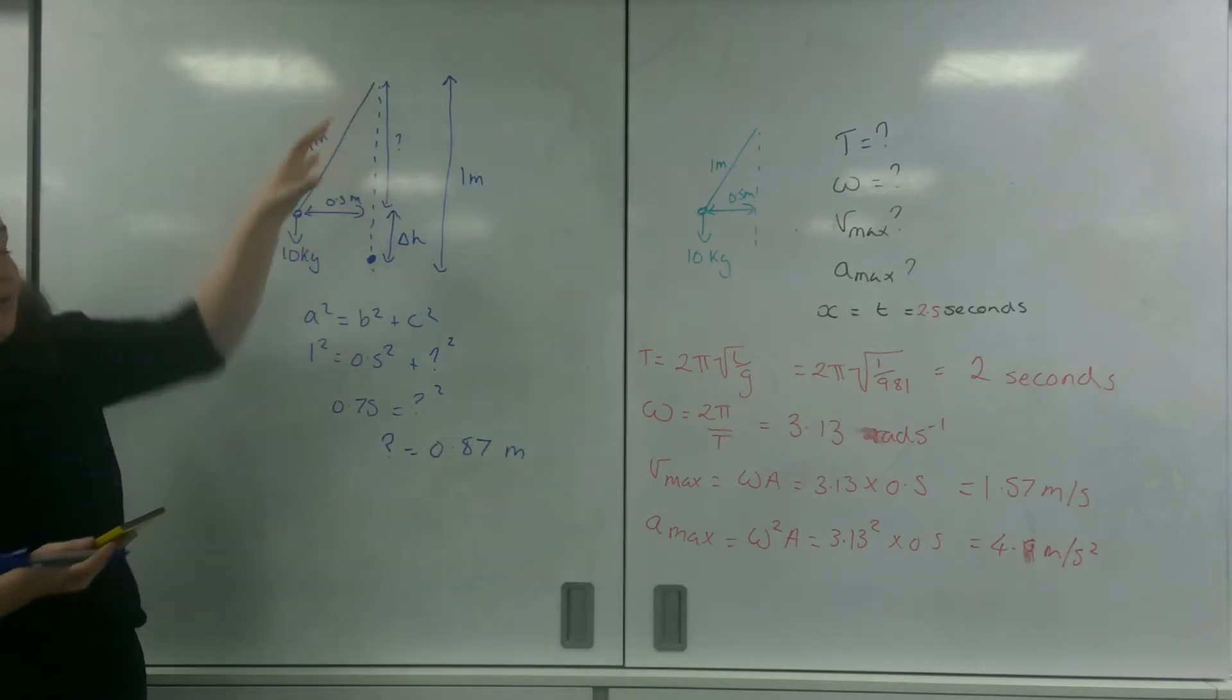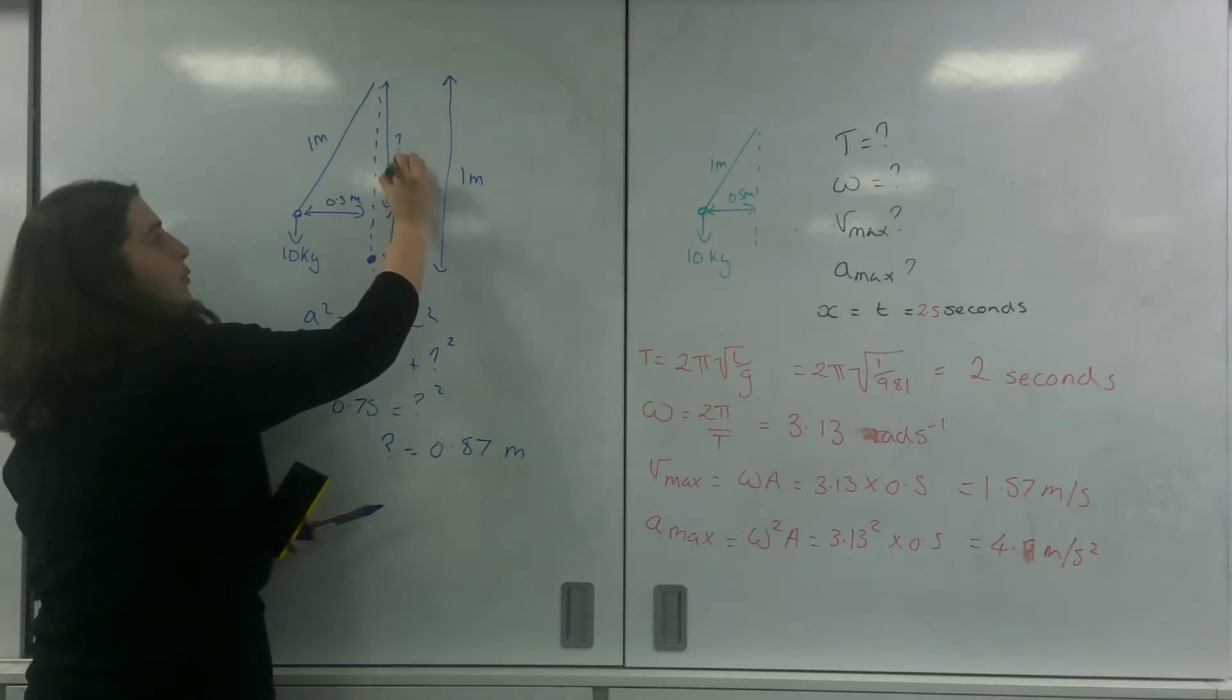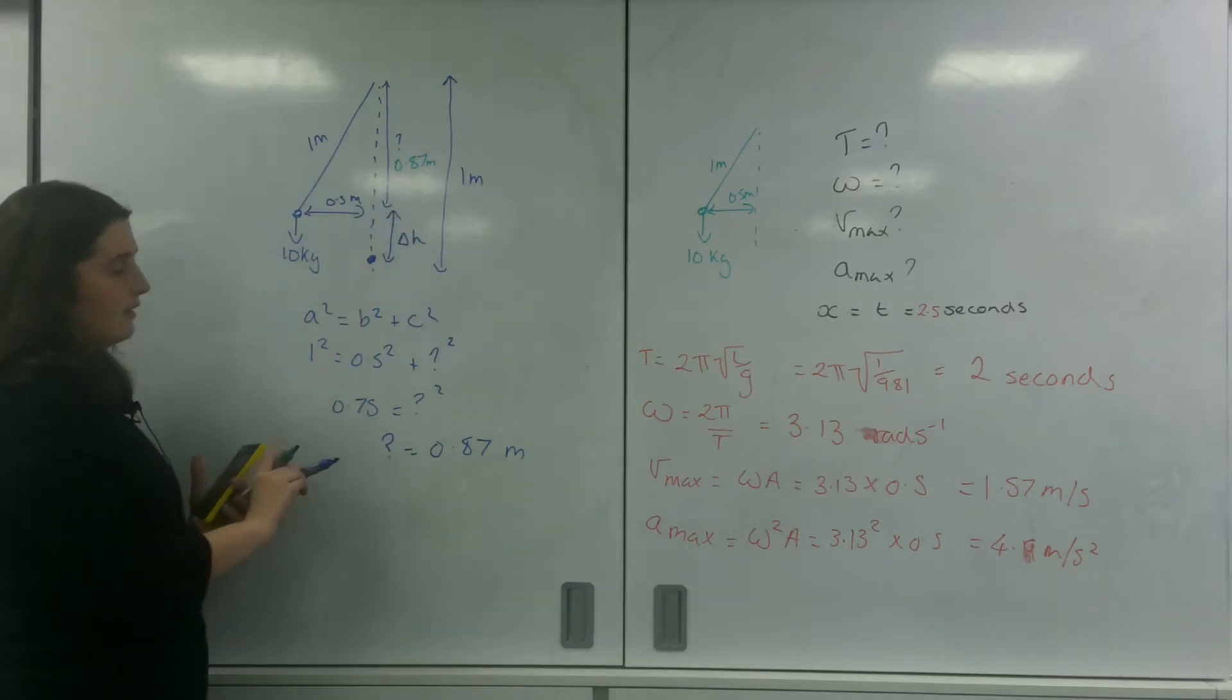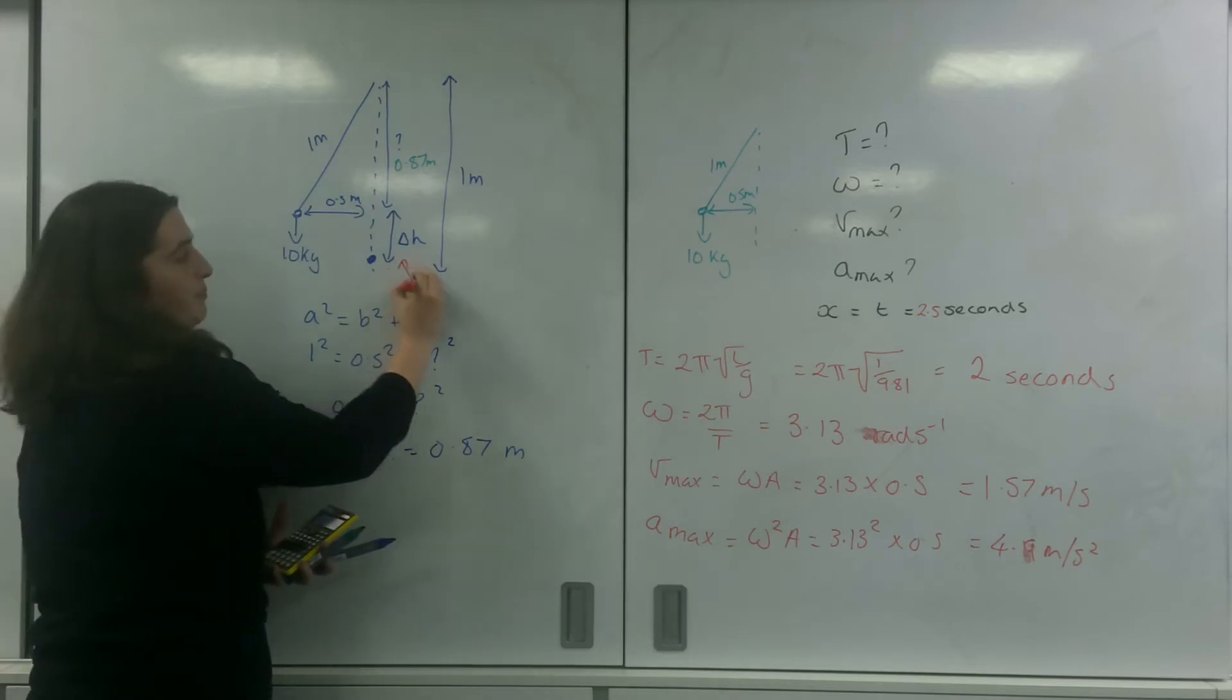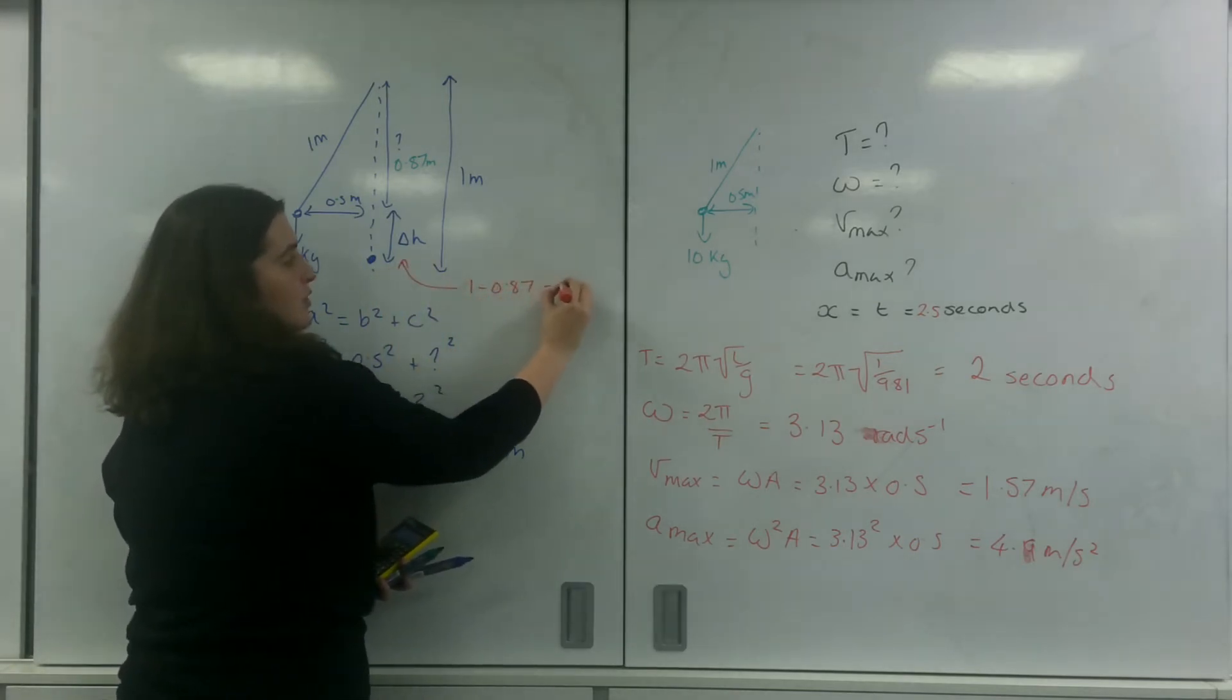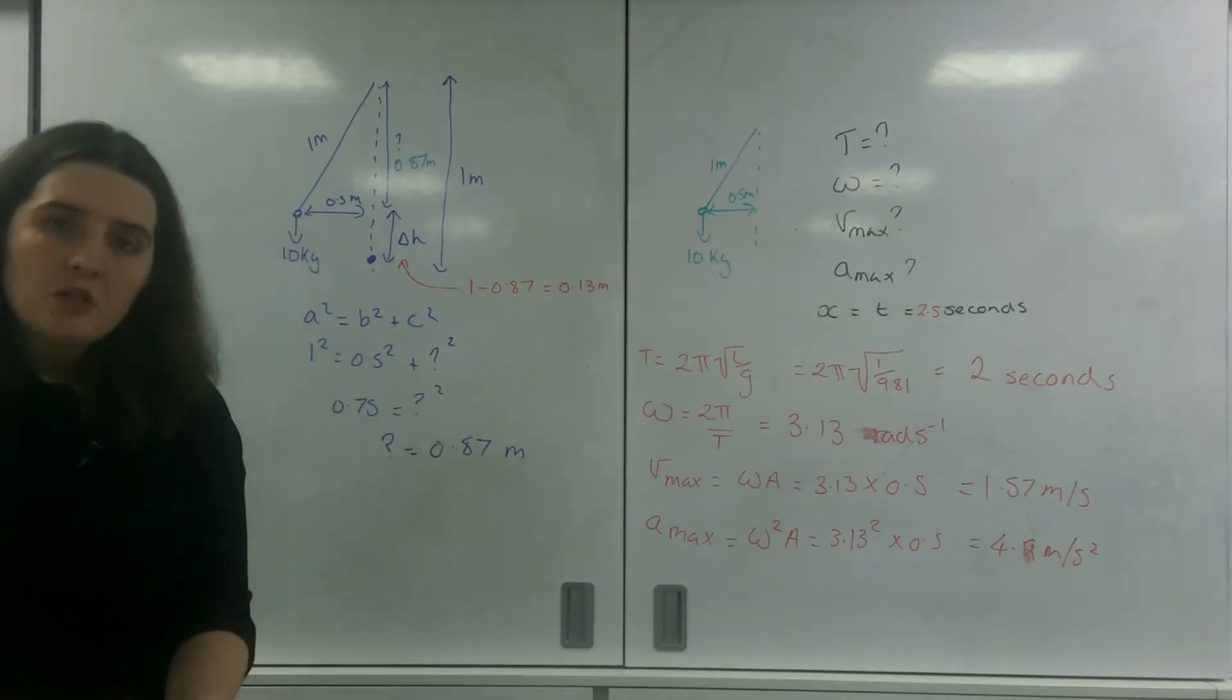So that distance there is 0.87 meters, which means my change in height here is going to be 1 minus 0.87, which is 0.13 meters.